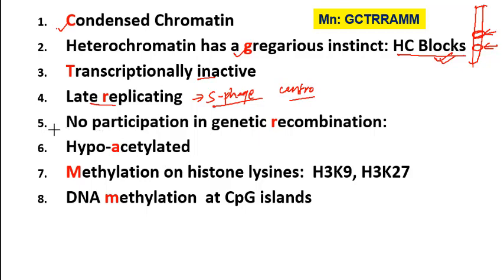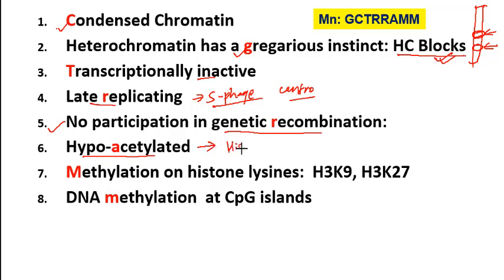Heterochromatin does not take part in genetic recombination, which happens during meiosis. Another property is that heterochromatin is hypoacetylated — meaning the histone tails in this region are hypoacetylated.